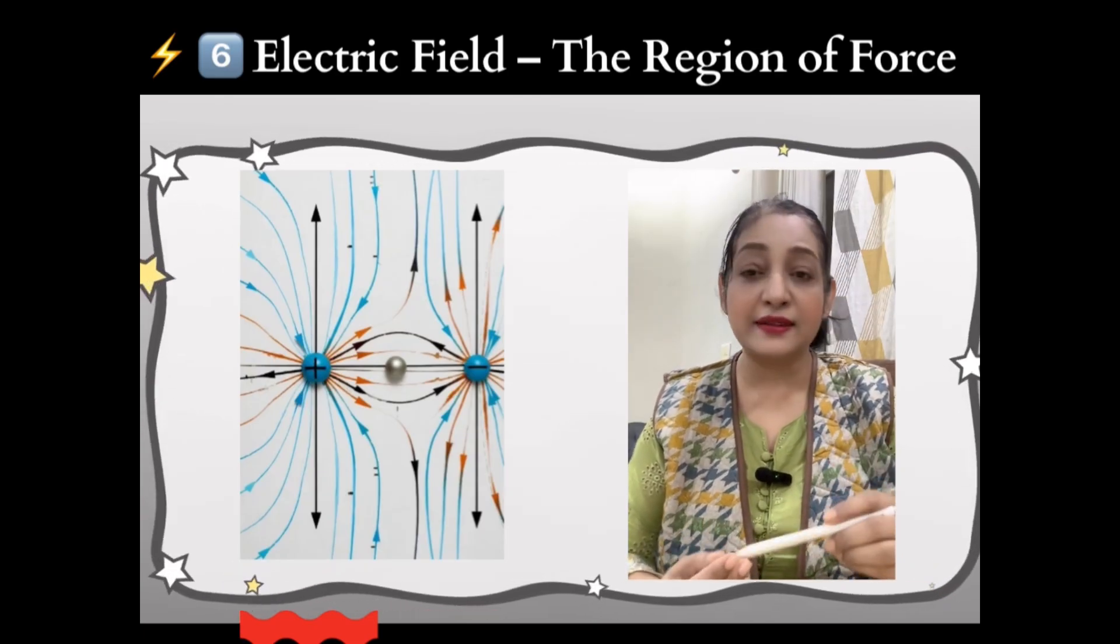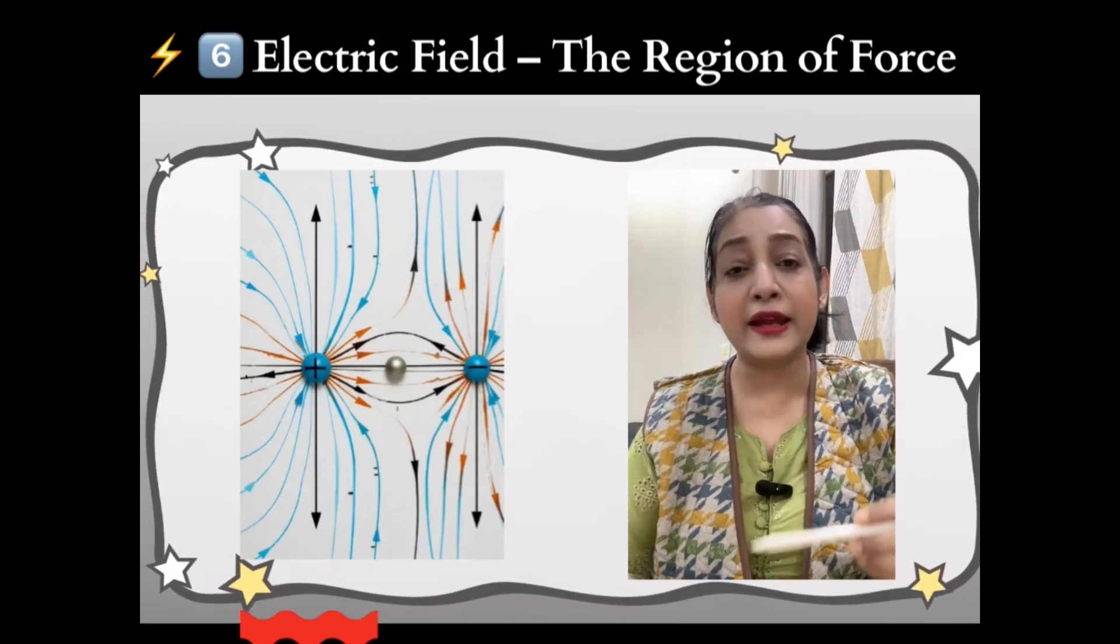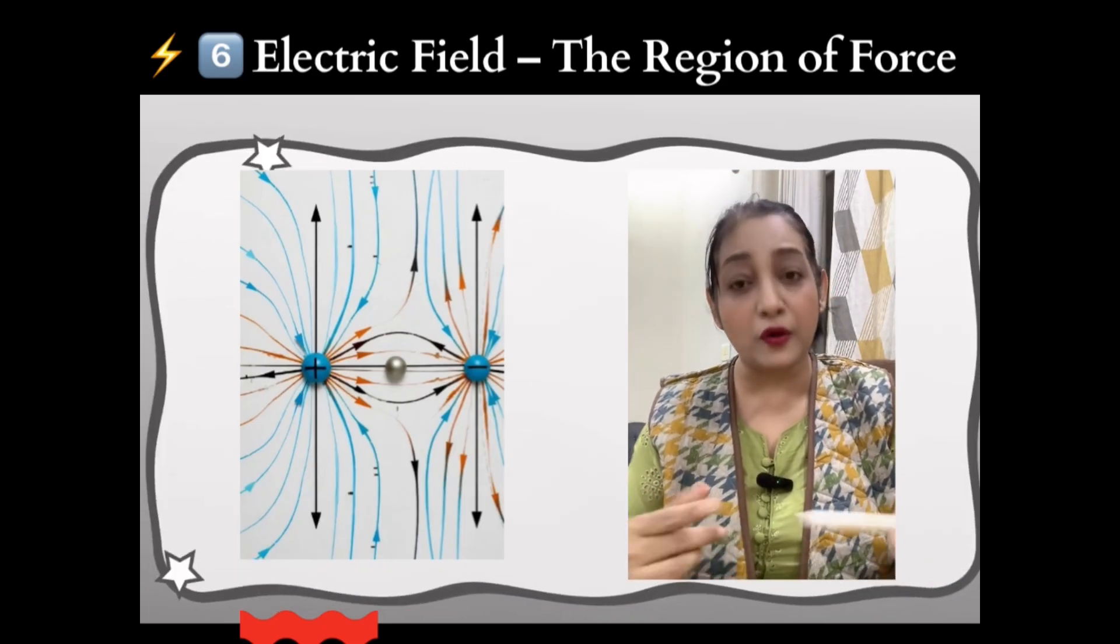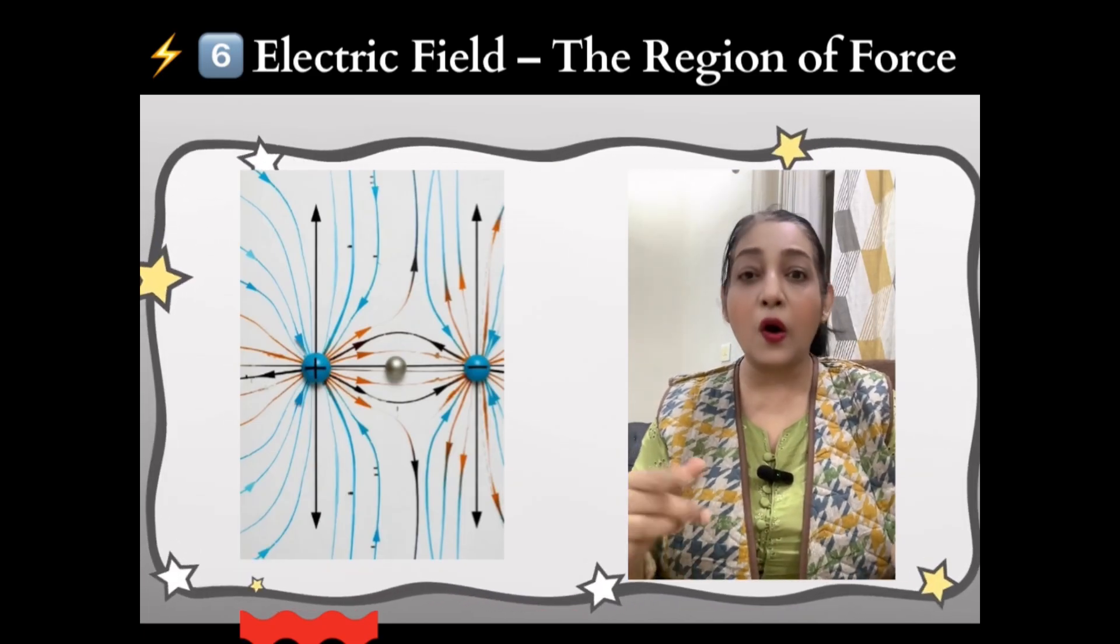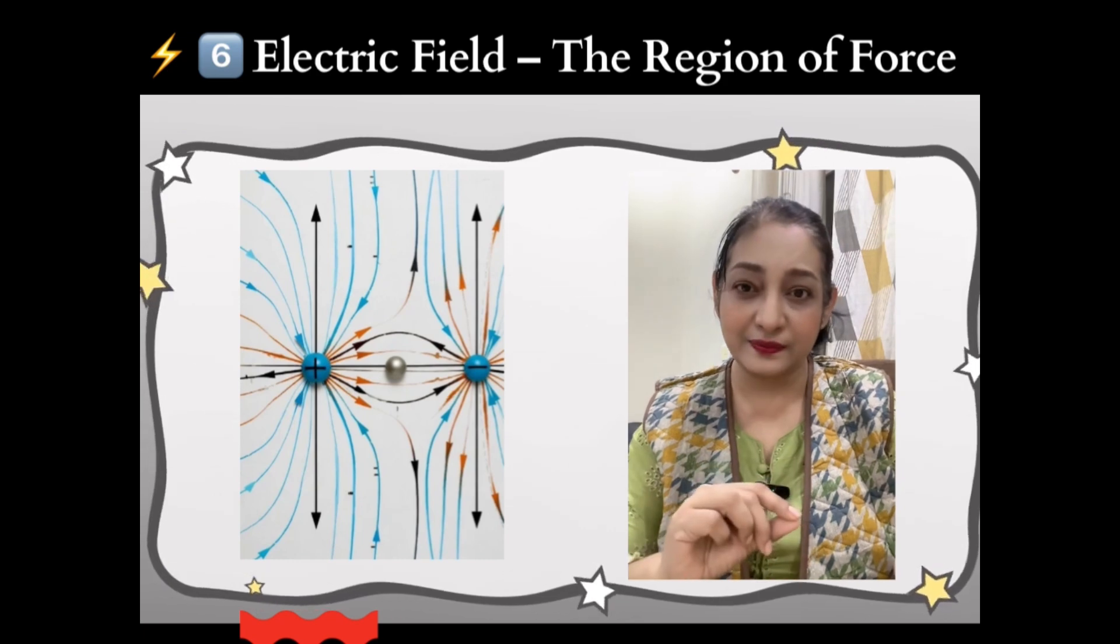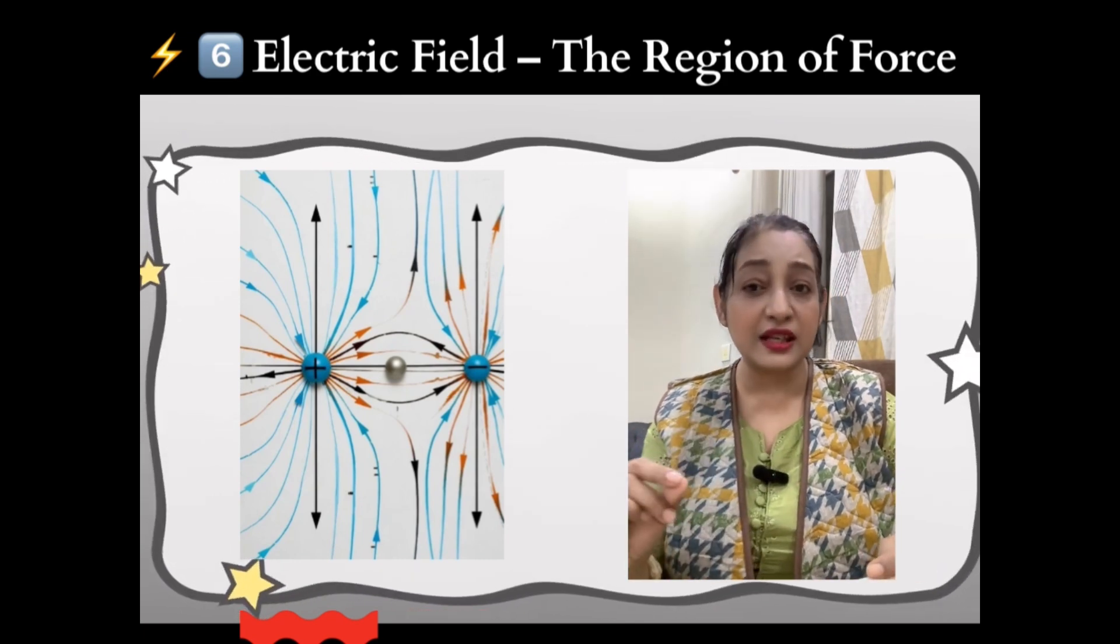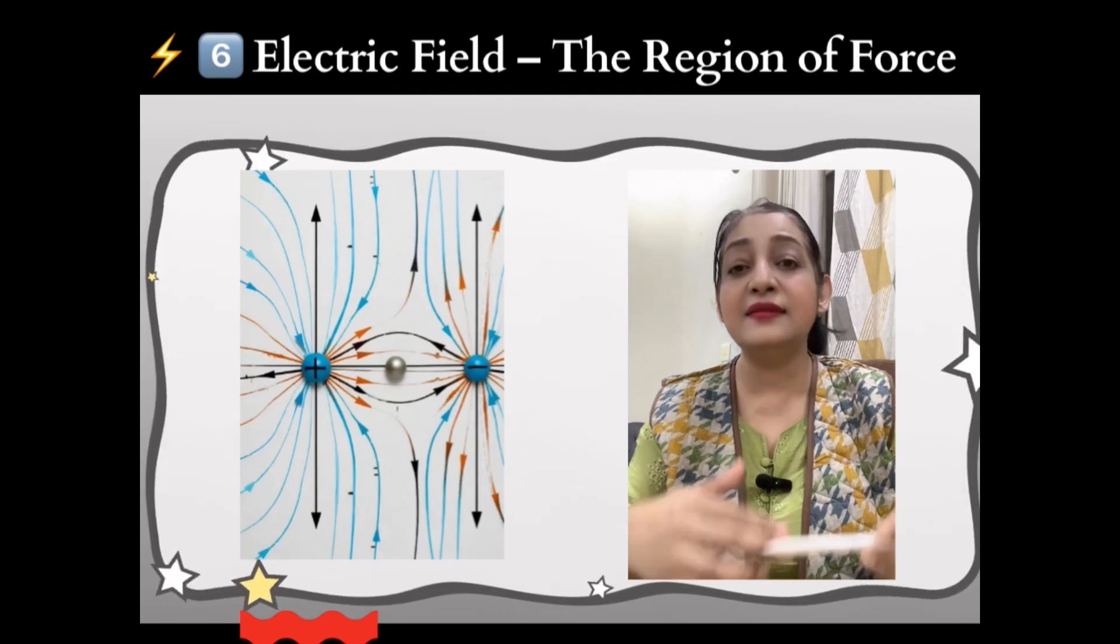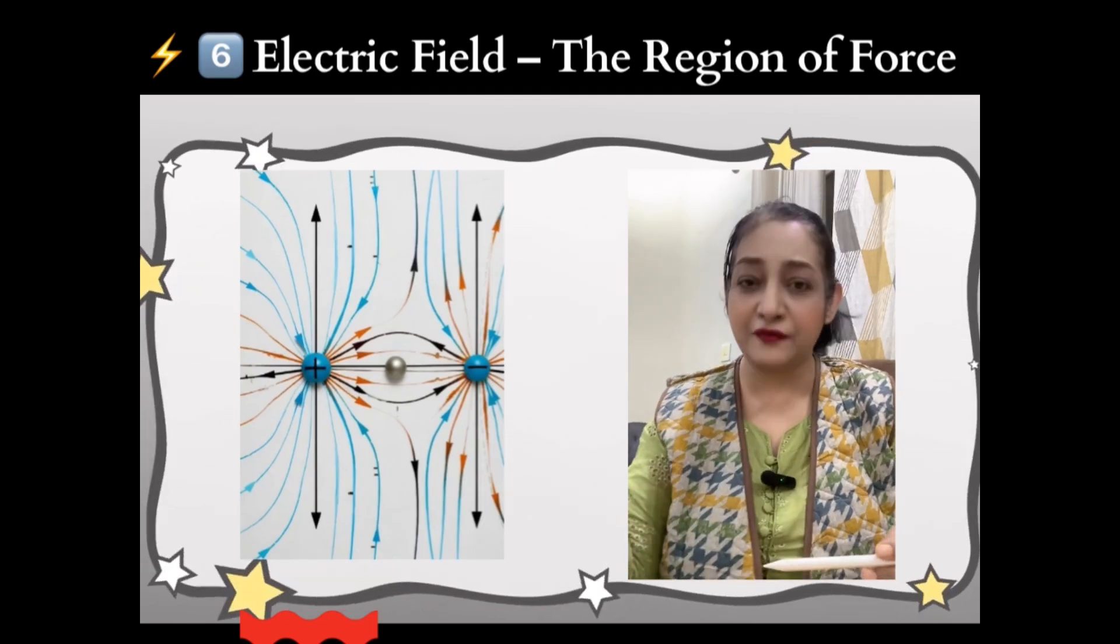Now look at on the screen, rules for drawing electric field lines: lines start from positive and end on negative charges. They never cross each other. Closer lines mean stronger field, lines spread out mean weaker field.